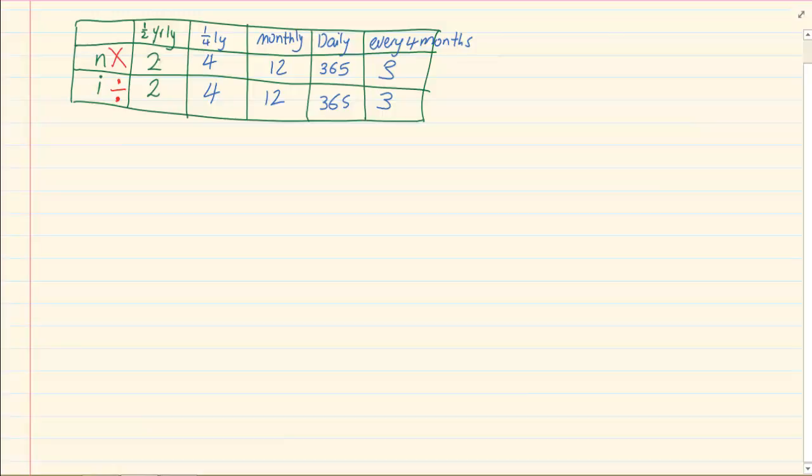So when it's half yearly we will change it by 2, when it's quarterly we will change it by 4, monthly we change it by 12, daily 365 unless stated otherwise and every four months means three times. We adjust the N by multiplying it and we adjust the I by dividing it.